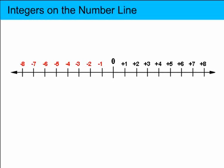So the number line is actually extended to the left of zero, and these are called negative numbers.